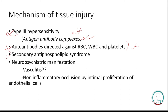Secondary antiphospholipid syndrome is present in SLE patients — secondary because it is present secondary to the SLE. The patient may develop lupus anticoagulant antibody; paradoxically, despite the term anticoagulant, the patient develops a hypercoagulable state. Deep vein thrombosis, thrombosis in cerebral blood vessels, and recurrent miscarriage may occur. Neuropsychiatric manifestations may present as psychosis and seizures. It was believed these were due to vasculitis, but now it is believed that non-inflammatory occlusion by intimal proliferation of endothelial cells may be the cause.